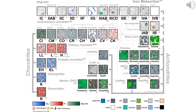Mineralogical analysis: under a polarizing microscope or electron microscope, characteristic minerals such as olivine, pyroxene and plagioclase can be identified. The mineral composition is crucial for classifying meteorites into groups such as chondrites, achondrites or differentiated meteorites.